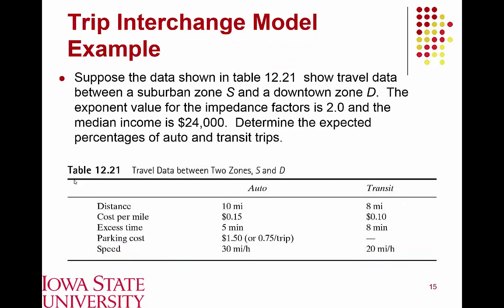In a sample example: we're determining how many trips will utilize transit between a suburban area and a downtown area. The exponent value b is 2.0 and the median income is $24,000. Auto trips are slightly longer and more expensive than transit trips, but transit has larger excess time for walking and waiting. Automobile also has parking costs but tends to provide slightly higher travel speeds.